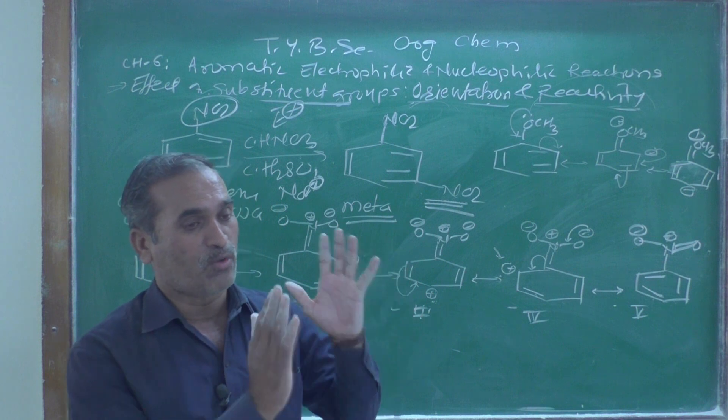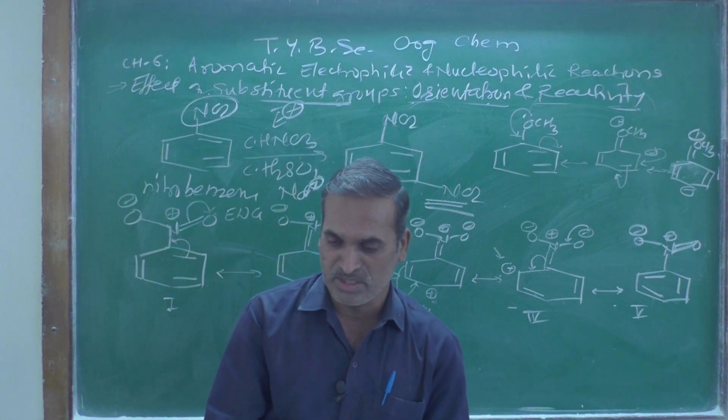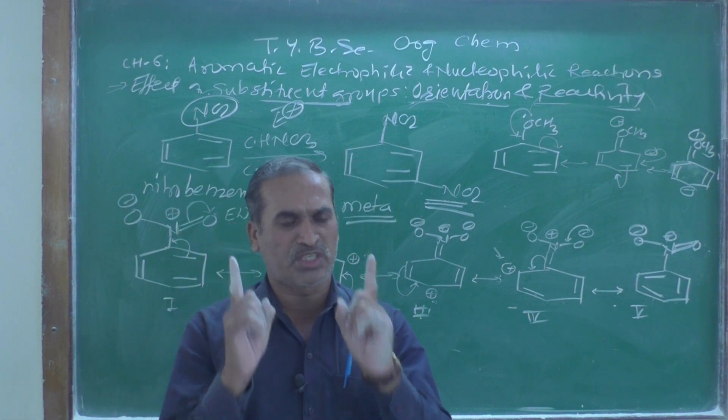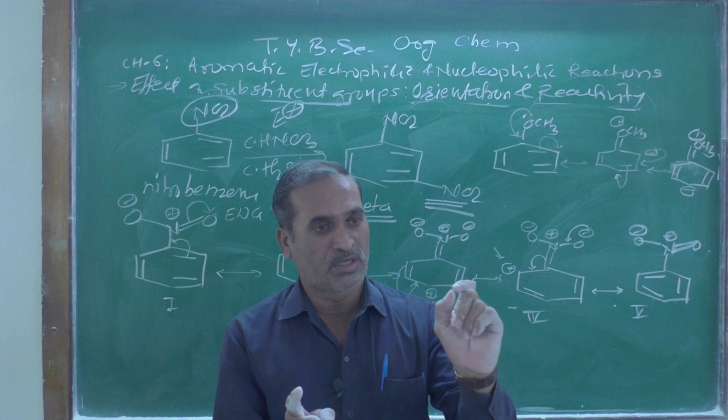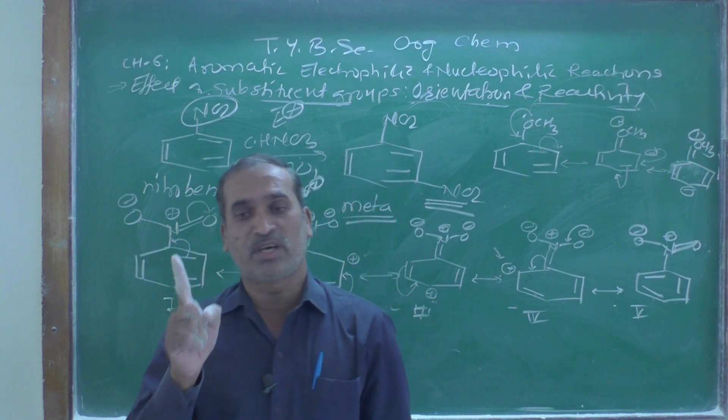When predicting products, always remember: if monosubstituted benzenes are present, check what type of substituent is there—whether it is an electron donating group or an electron withdrawing group.